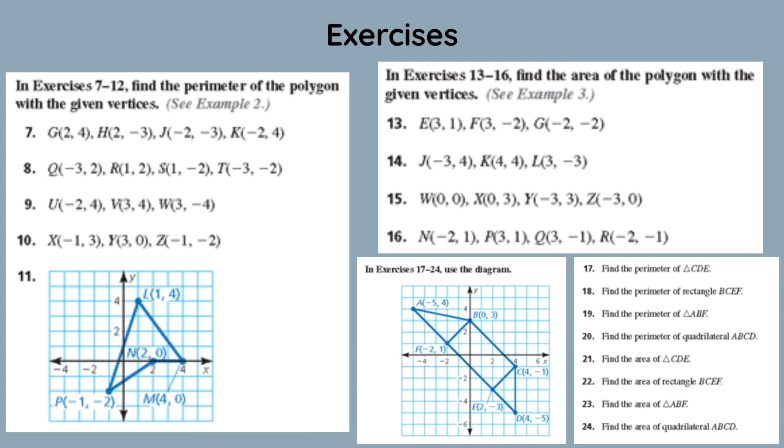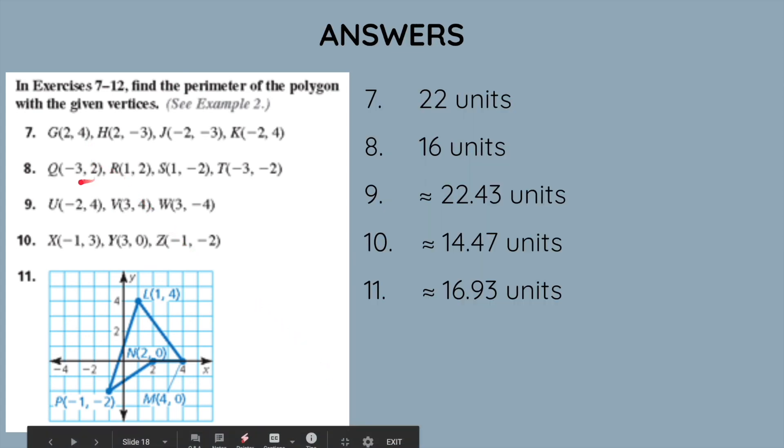Okay, now we'll move on to showing you guys the answers. For 7, 8, 9, 10, and 11, we have 22 units, 16 units, around 22.43 units, around 14.47 units, and around 16.93 units.